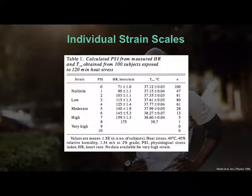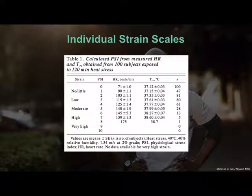As those values respond to sitting — this is 120 minutes of passive heat stress, sitting in the heat — core temperature goes up, heart rate goes up. A moderate PSI, a moderate strain, would be 38 degrees core temperature and 140 beats per minute — like moderate exercise — from just sitting for two hours in the heat.